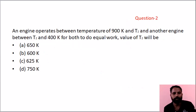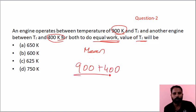Next question: T1 is 900 Kelvin, T3 is 400 Kelvin. For equal work output, use arithmetic mean: T2 equals 900 plus 400 divided by 2, which equals 650 Kelvin. Option A is the answer.